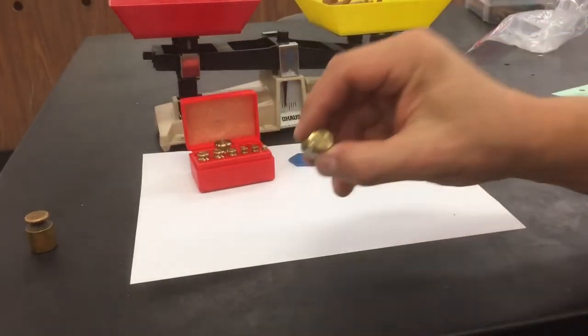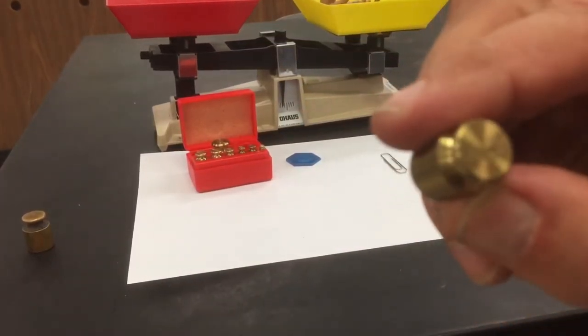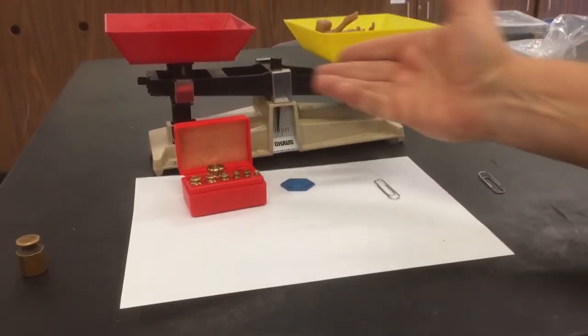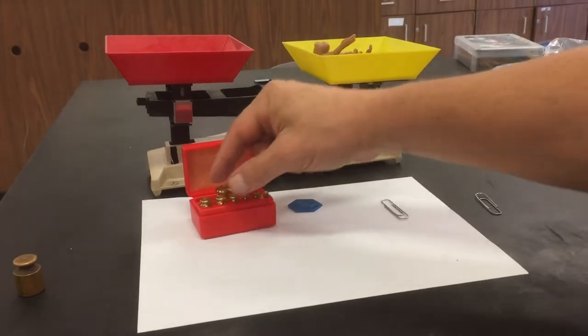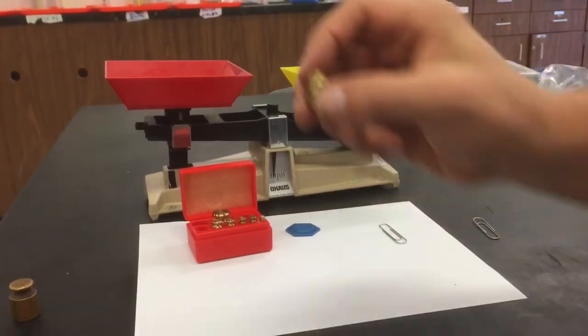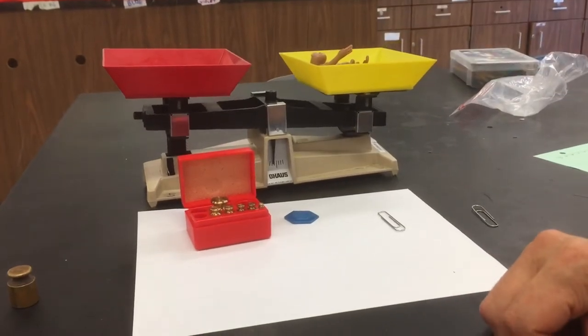I'll use the next one. There's 20 gram. So I'm going to put the 20 gram in there. Now 20 grams is what? It's too light. So now I have to add more. So I'm going to go with a 10. Getting closer.